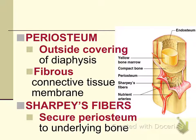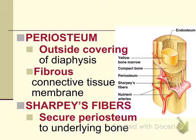Recall from the last unit that one of the membranes was called the serous membrane — a covering that covers any organs not exposed to the outside. Bone is one of those organs not connected to the outside. Serous membranes have double layers called the visceral layer and the parietal layer. The visceral layer is the outermost layer of the organ, and in the case of bone, it is called the periosteum.